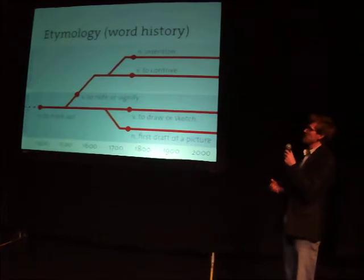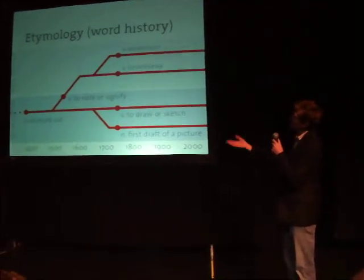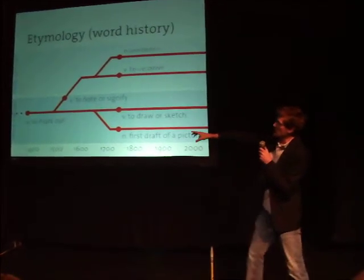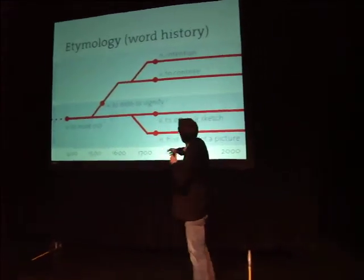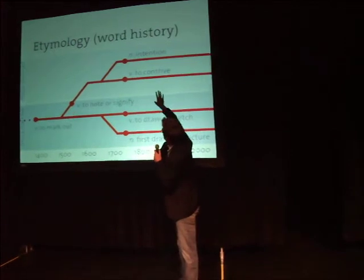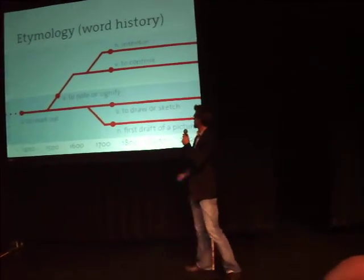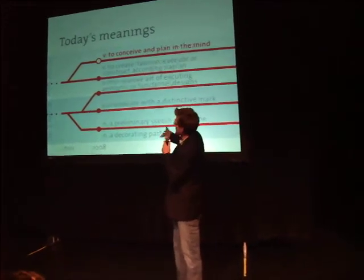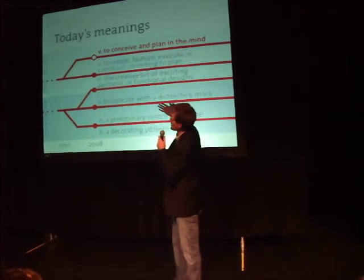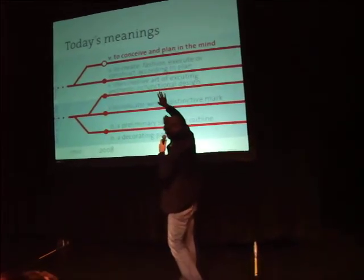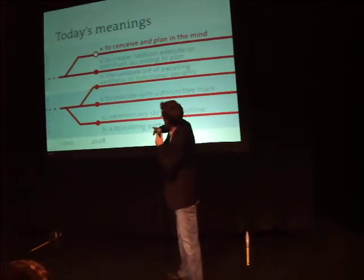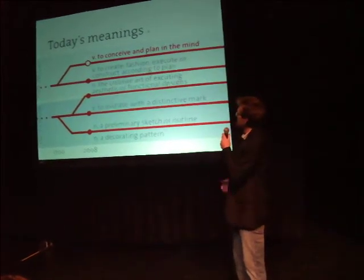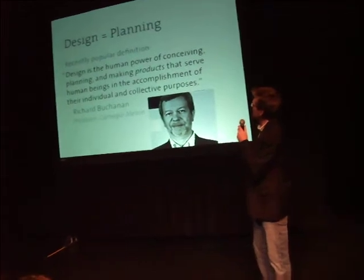The question is: what word do we use to apply to the discipline as a whole? Looking back at the etymology — the word history of 'design' — starting before the 1400s, we start with a narrow definition: 'to mark out.' Then in the 1700s, there's a branching into more abstract definitions down to the more specific 'first draft of a picture.' Now in 2008, from the Merriam-Webster dictionary, there are actually 12 definitions, going from the broadest — 'conceived and planned' — to the most specific: 'a decorating pattern.' It's the broadest definition that's being applied today to define the discipline as a whole.